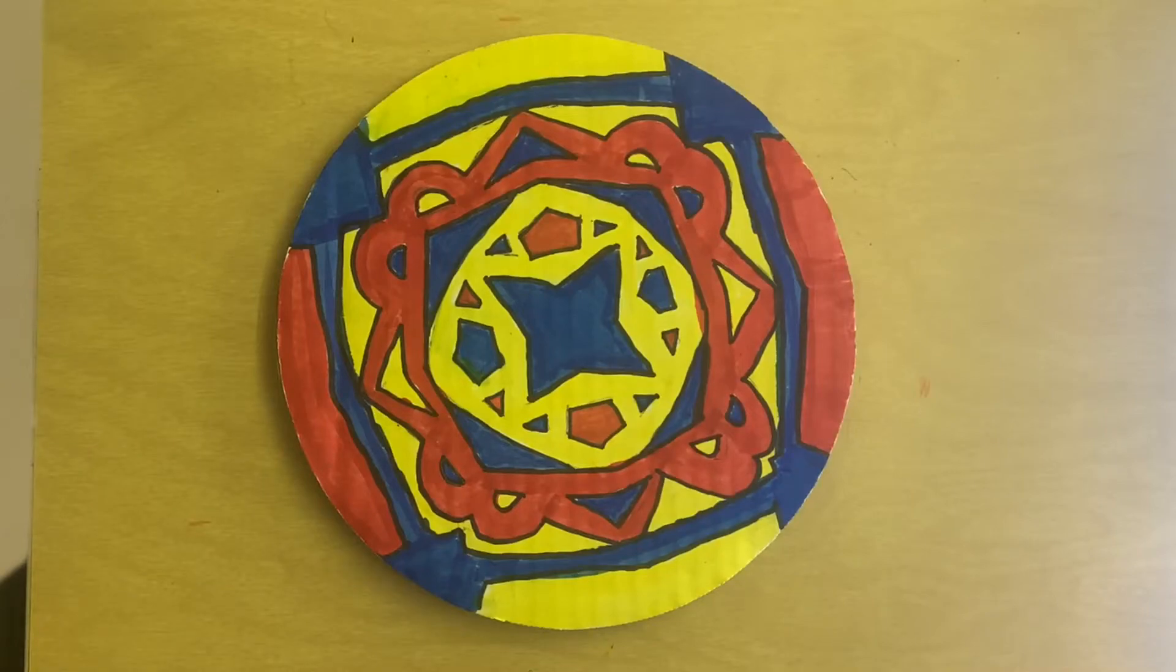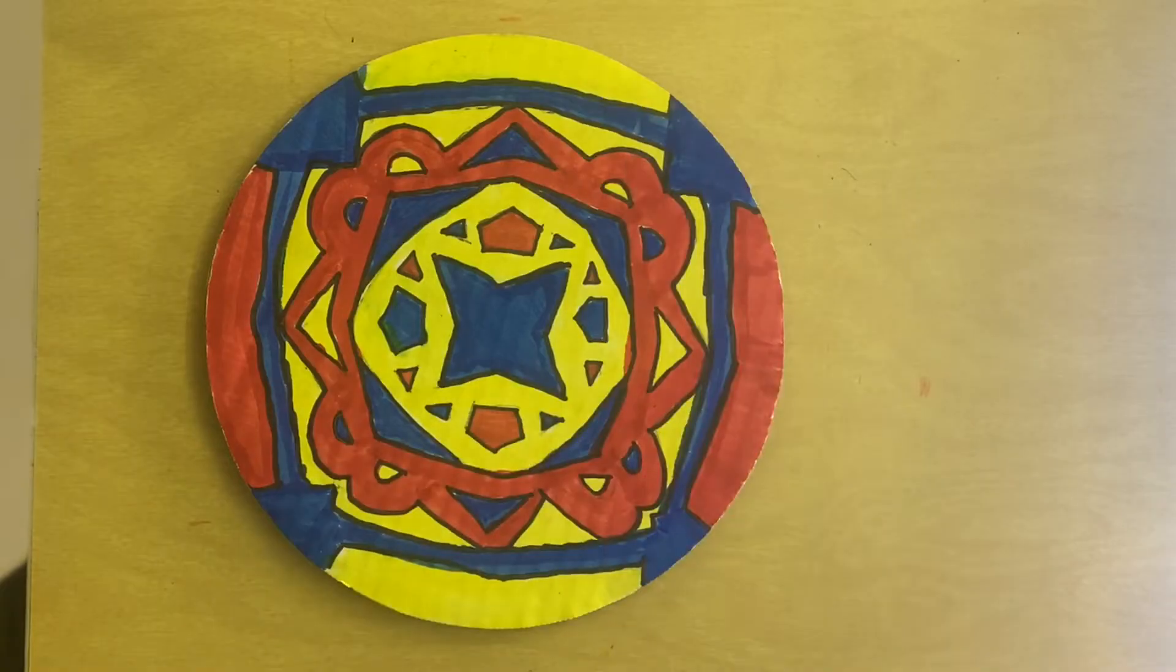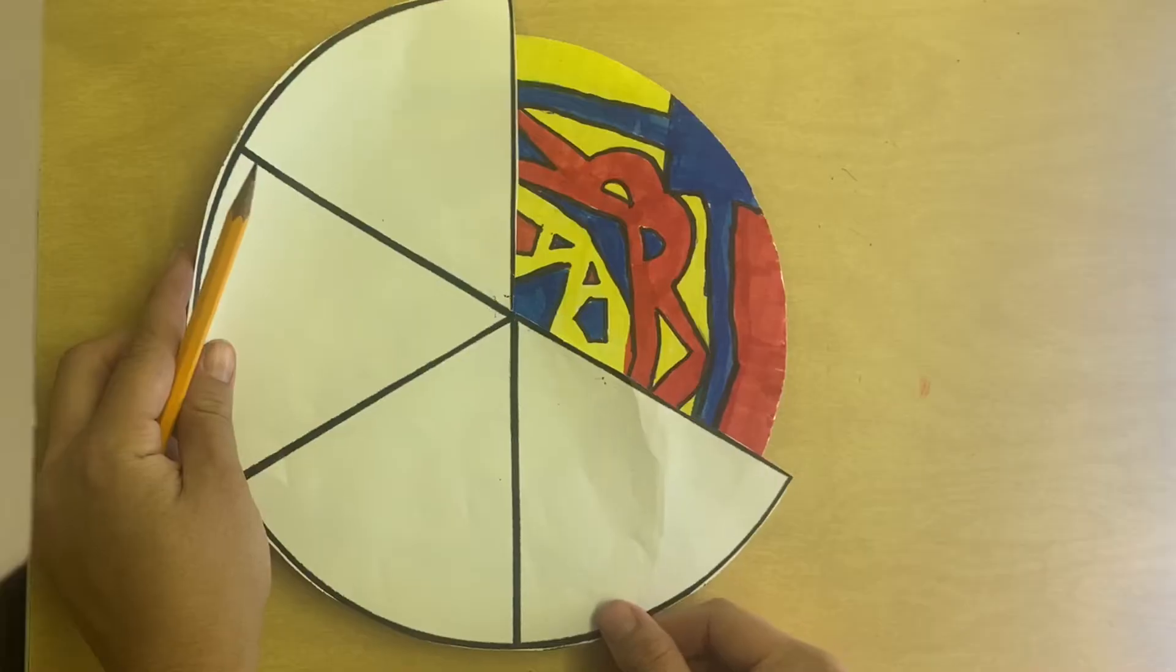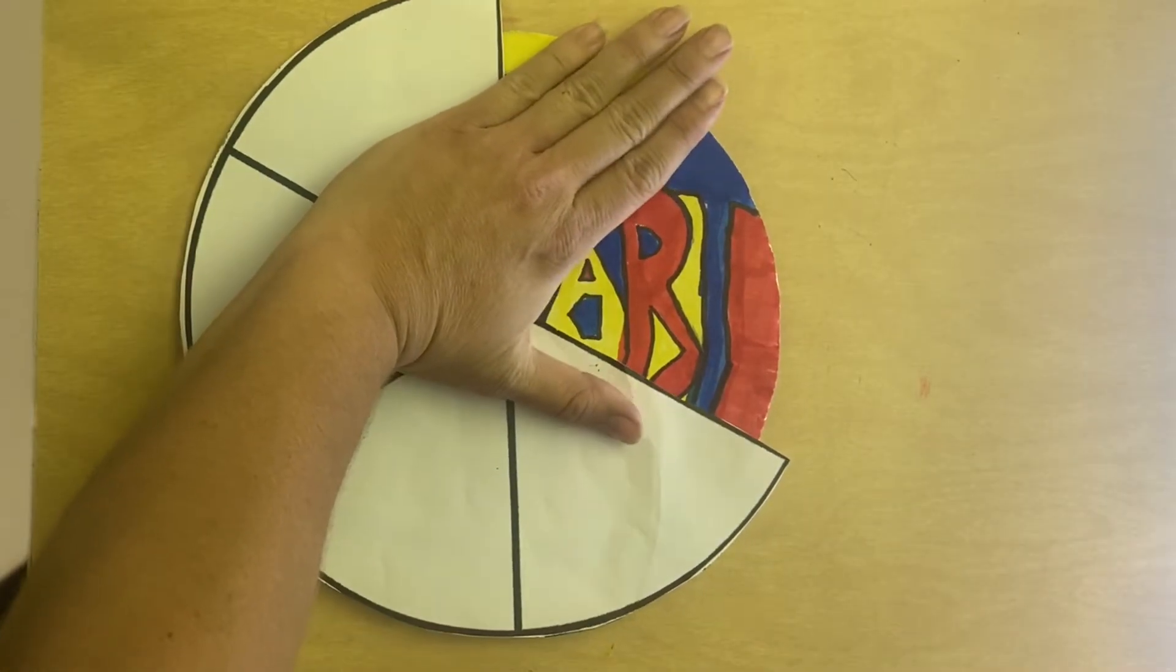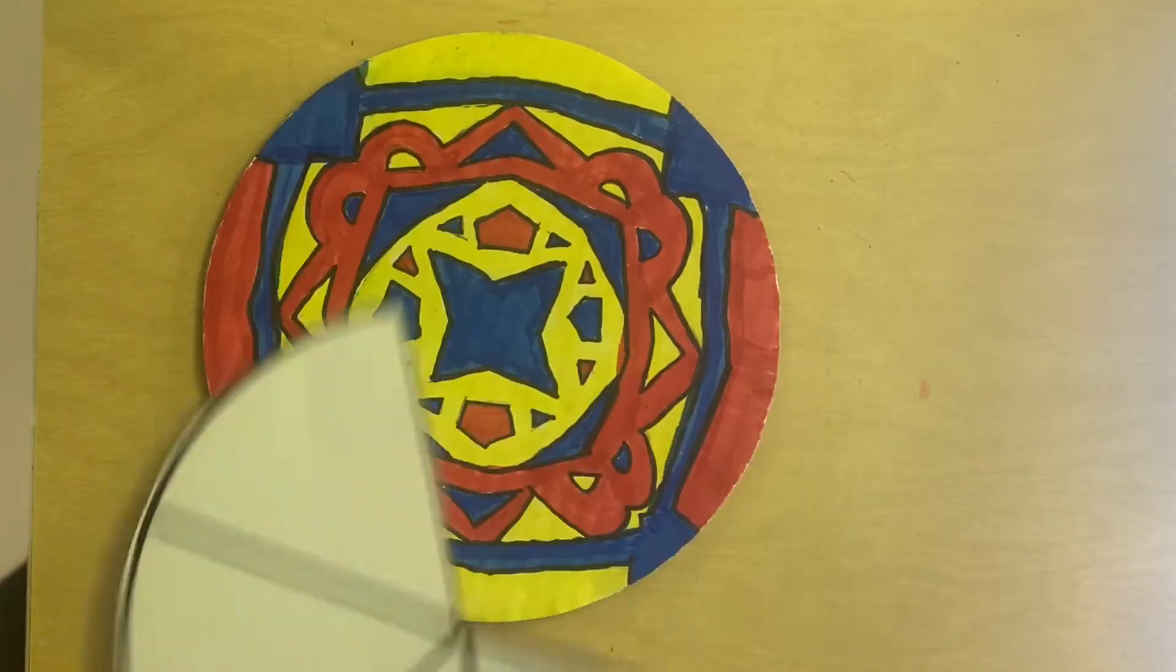Okay, we're going to make name mandalas around the circle. This is radial symmetry - it's the same around the circle. Right now you think it's just a really cool abstract design, but if we cover up and look at just one piece of the triangle, you can see that I wrote the word 'art' and then art is repeated around the circle.